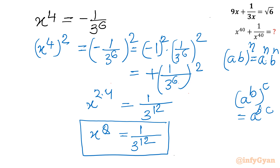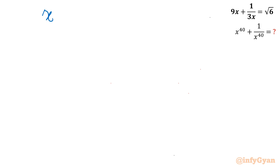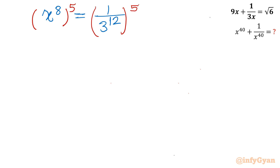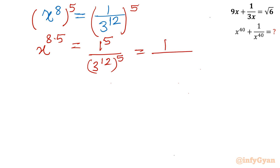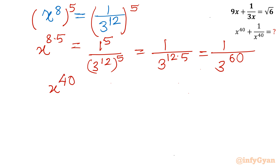Now the task is very easy. X power 40 — we will calculate from x power 8 equals 1 over 3 raised to the power 12. Consider raising both sides to the power 5. So left hand side becomes x power 8 times 5, which is x power 40. Right hand side: 1 power 5 is 1, and using the exponent law, 3 power 12 whole power 5 equals 3 power 12 times 5, which is 3 power 60. So x power 40 equals 1 over 3 raised to the power 60.